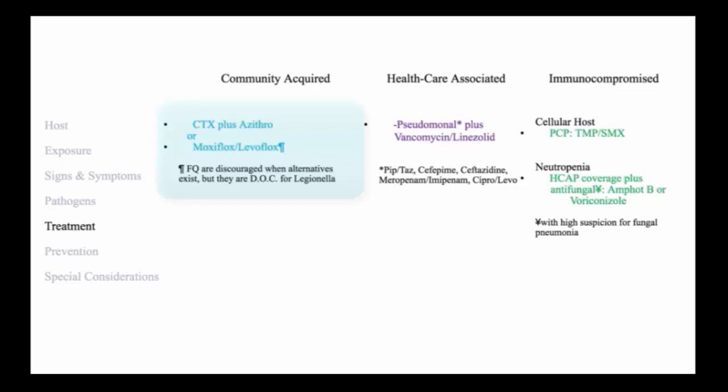So treatment of community-acquired pneumonia then requires coverage of strep pneumoniae and atypical pathogens. So the usual treatment course would combine ceftriaxone plus azithromycin or a respiratory fluoroquinolone, i.e. moxifloxacin or levofloxacin. Please note that the FDA now discourages the use of fluoroquinolones when alternatives exist because of emerging toxicities that are recognized with fluoroquinolones.